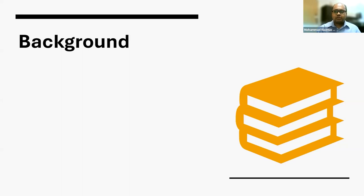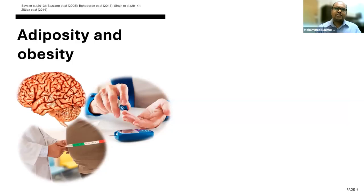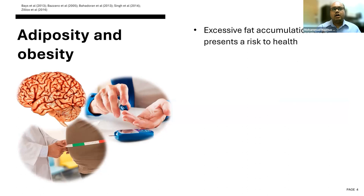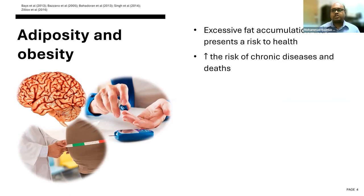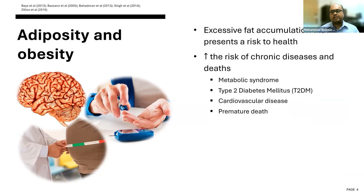Let's talk about obesity and its connection with cognitive function. The term adiposity indicates the degree of body fat accumulation, whereas obesity indicates excessive fat accumulation that presents a risk to health. Obesity is a public health concern because it increases the risk of other chronic diseases as well as death. In the literature, it was reported that obesity increases the risk of some other chronic diseases, for example, metabolic syndrome, type 2 diabetes mellitus, cardiovascular disease, and it can even cause premature death.